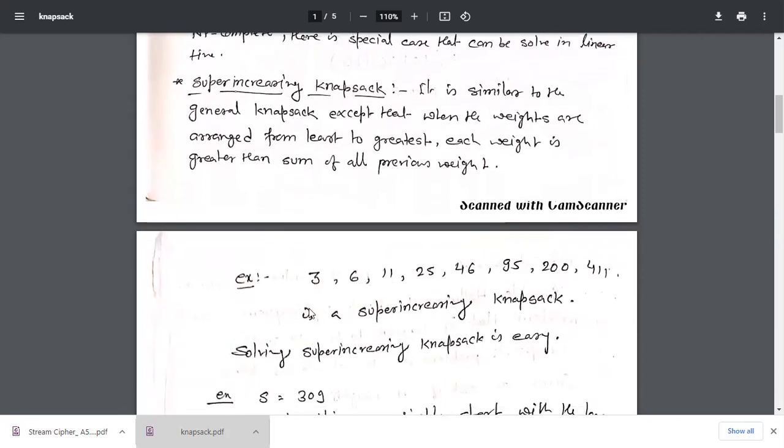Let us consider an example: 3, 6, 11, 25, 46, 95, 200, 400 is a super increasing knapsack. We can check it: 3 < 6, okay. 6 + 3 = 9, 9 is less than 11. 9 is less than 11 means the next number is greater than the sum of the previous numbers.